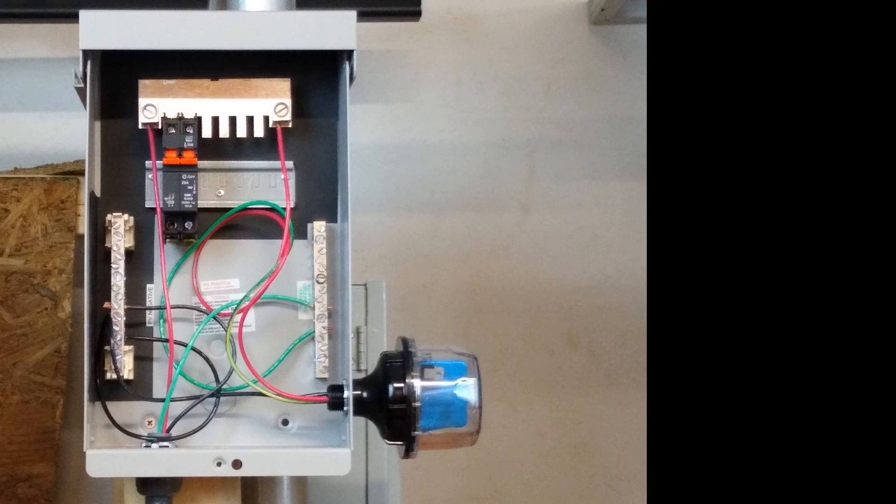And you can see on this particular example, the tab has two lugs attached. So we're using one of the lugs for the positive PV output circuit, and we're using the other lug to connect in our surge protector. So that's it for wiring a midnight solar DC combiner box.